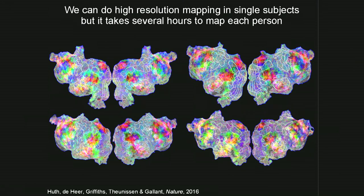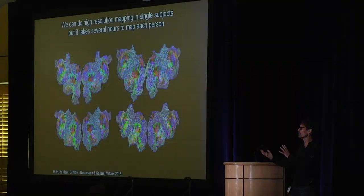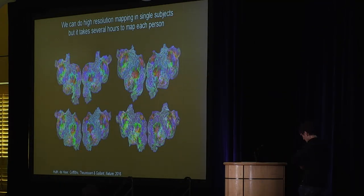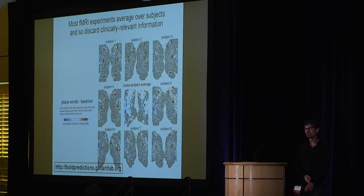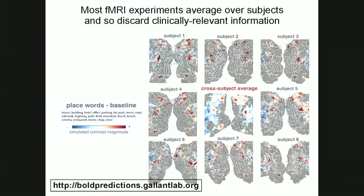Can we do this much, much more quickly? The first thing we need to do is map individual brains. Here are four individual brains — you can see they're similar but not exactly alike. About a third of the variance in brain maps is common between individuals, and about two thirds reflects individual differences in experience and development. And in most neuroimaging experiments, the individual subjects are never examined or mapped at all — the data is just aggregated together.